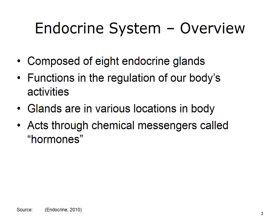The endocrine system is composed of eight endocrine glands that assist in regulating our body's activities. The endocrine glands are found in various locations throughout our body, and their actions have effects throughout the body. All endocrine glands secrete hormones, or chemical messengers, directly into the bloodstream, where they are transported to cells waiting for their messages. These hormones help your body respond to stress, regulate your blood pressure, and regulate your water and salt balance.